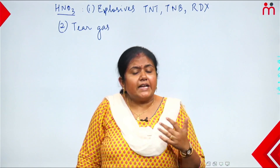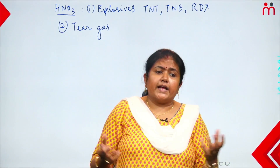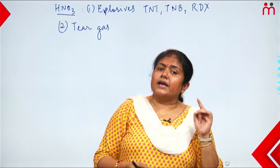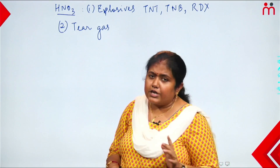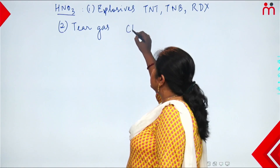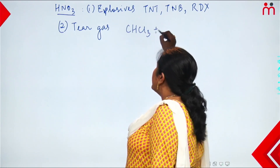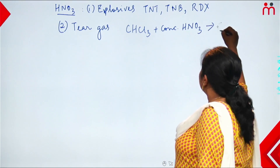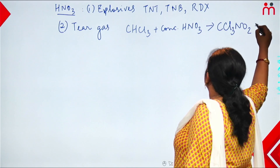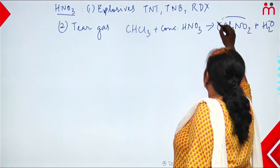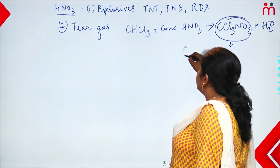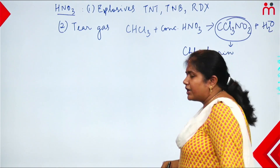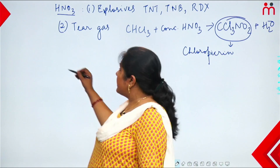Another use of nitric acid is in preparation of tear gas (chloropicrin). Tear gas is used by police to disperse mobs. Tear gas (chloropicrin, CCl₃NO₂) is produced by the reaction of chloroform and concentrated nitric acid: chloroform + concentrated nitric acid → CCl₃NO₂ (chloropicrin) + water.